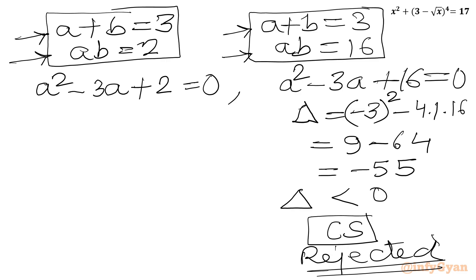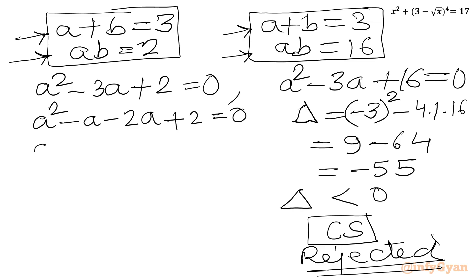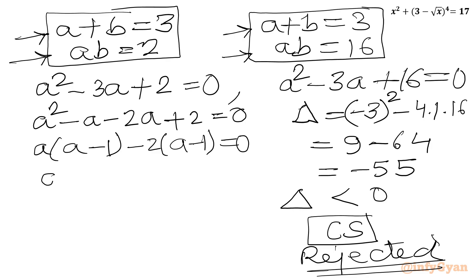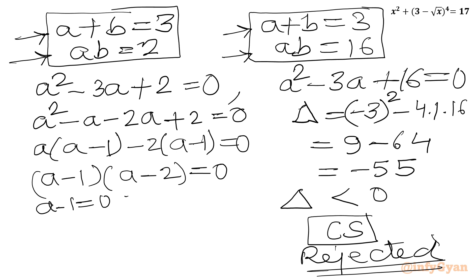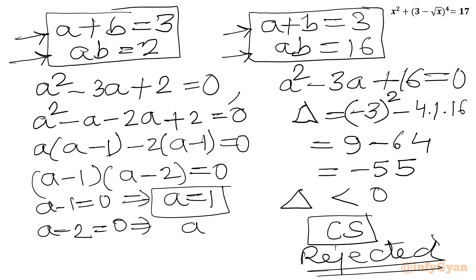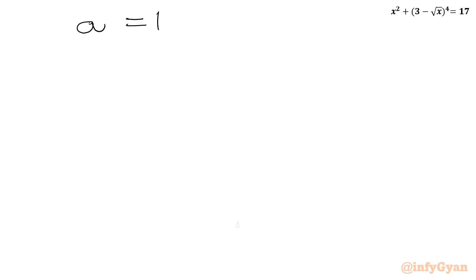Now for the first quadratic a² minus 3a plus 2 equals 0, we factor: minus 3a splits as minus a minus 2a, giving a(a minus 1) minus 2(a minus 1) equals 0, so (a minus 1)(a minus 2) equals 0. Therefore a equals 1 or a equals 2.